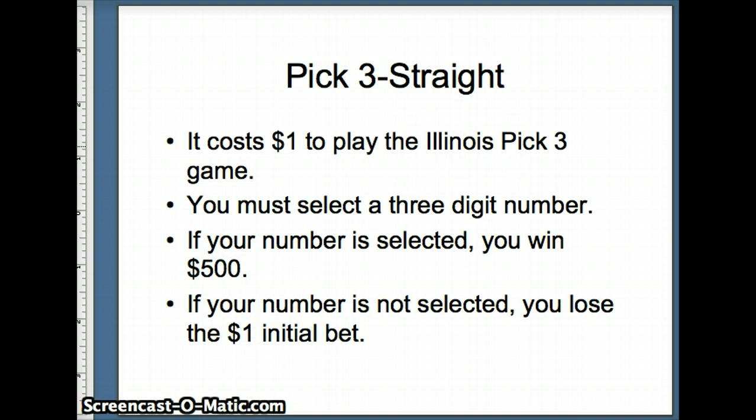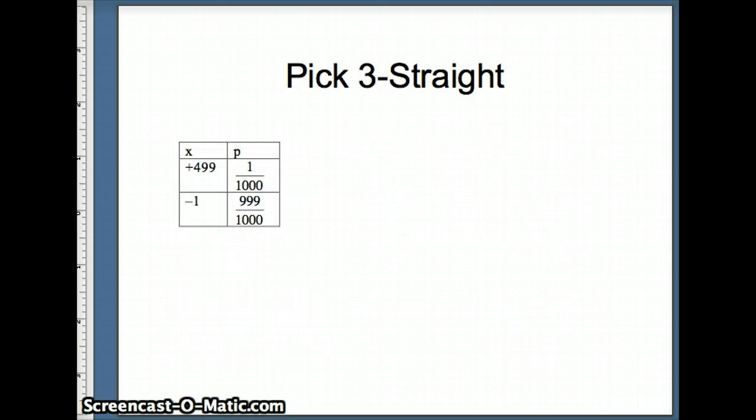Picking a three-digit number, there are 1,000 three-digit numbers, so that should indicate to us what that random variable is going to be. You're going to win $499 if your three-digit number comes up, one out of 1,000. You're going to lose $1, if not, 999 out of 1,000.